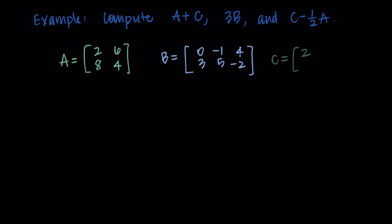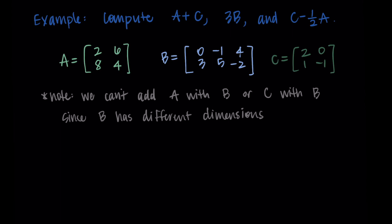Before we get into doing the examples, I just want to note that we can't add A with B or C with B, and that's why we're only doing the A and C together. This is because B has different dimensions. Both A and C are two by two, but the matrix B is two by three, and so we can't add or subtract it with the matrices that have the different dimensions.